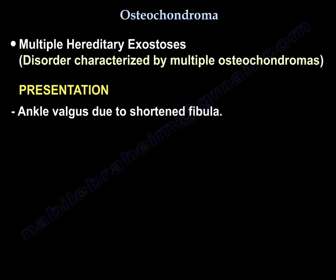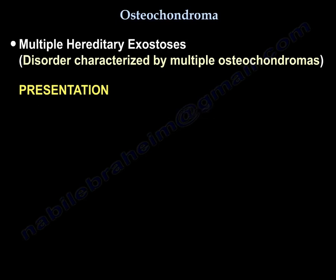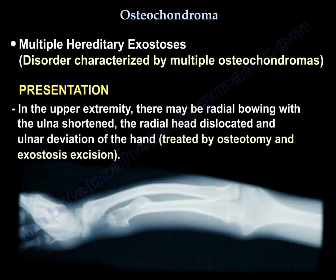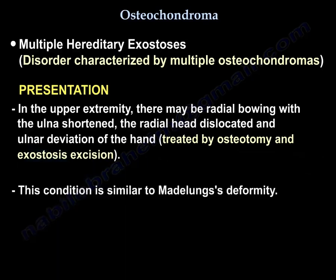In MHE you can also find a short femur. In the upper extremity, there is radial bowing, a short ulna, dislocated radial head, and ulnar deviation of the hand. This condition can be treated by osteotomy and exostosis excision. The condition is similar to Madelung deformity.